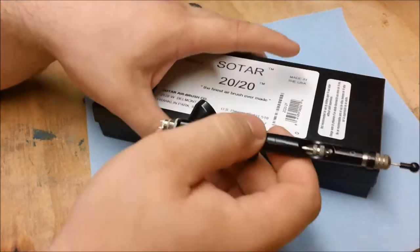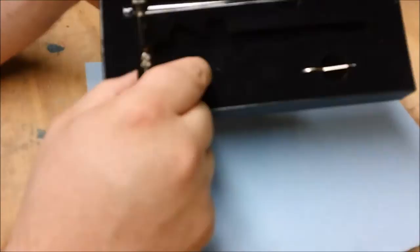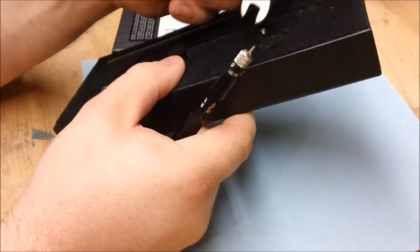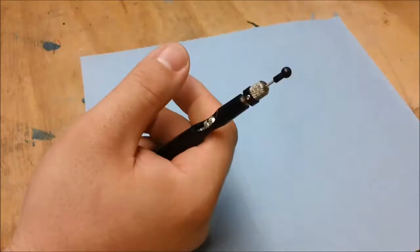So this is the box that mine came in. You get an extra needle as well as an additional tip for the end, and then they give you a small wrench to disassemble your tool if you need to.